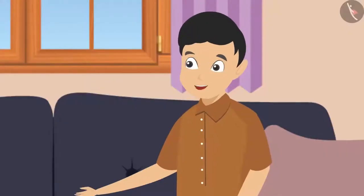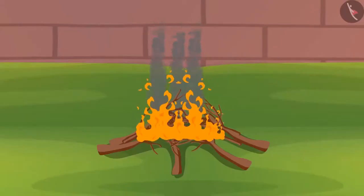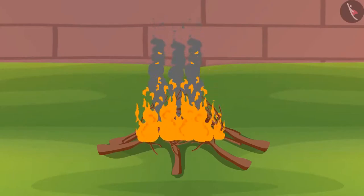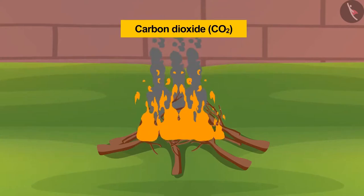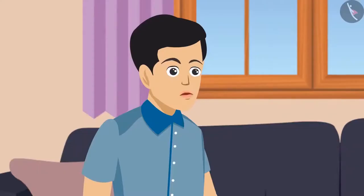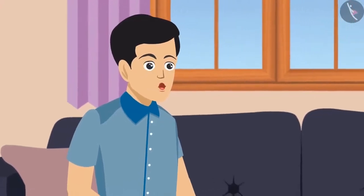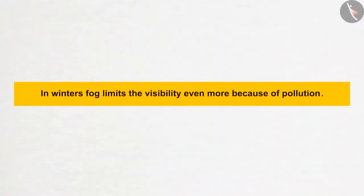What an interesting experiment! Have you seen that whenever we burn wood, it gives black fumes? That fume is a mixture of many gases of which CO2 is the main component. I heard in TV news that the pollution level of cities like Delhi and Lucknow often rises — carbon dioxide is the main component, due to which people struggle to breathe and can only see up to short distances. In winters, fog limits visibility even more because of this.